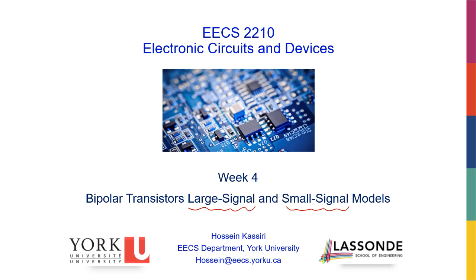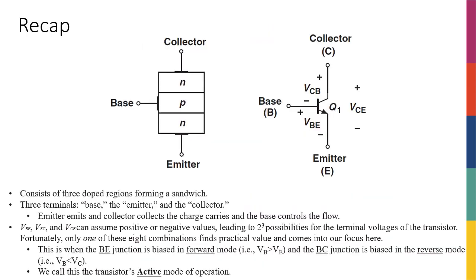Understanding these models, where they come from, and how to use them is very critical in analyzing any kind of transistor-based circuit that uses bipolar transistors. As a recap, the transistor we introduced is made of three doped regions forming a sandwich: an N-type material we call the emitter, a P-type material in the middle we call the base, and another N-type material we call the collector.